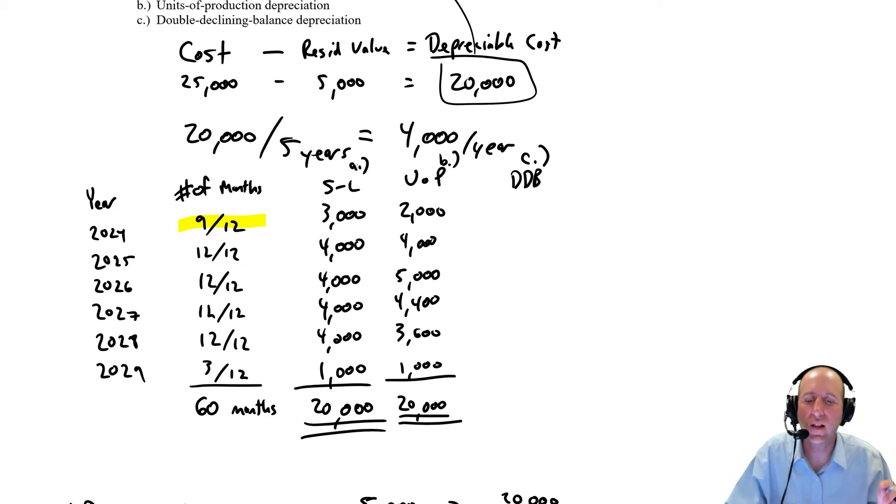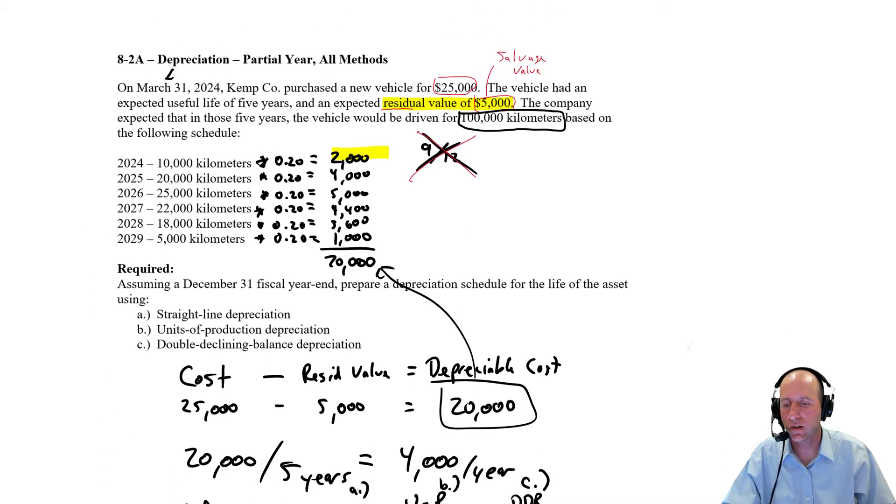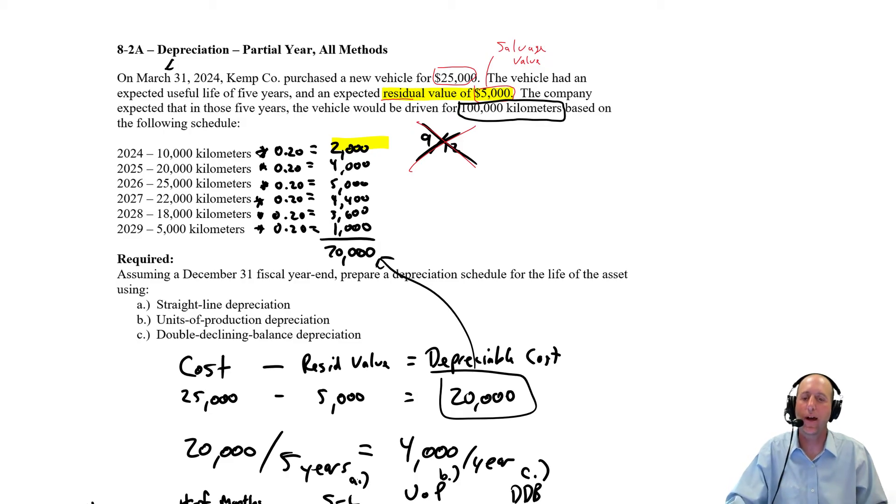Okay, we are into the last video of this series, just solving problem 8-2-A from our accounting workbook, the trickiest of the three, double declining balance depreciation. So we purchased this asset on March 31st, 2024, and we want to depreciate it using double declining balance.